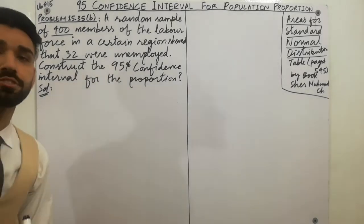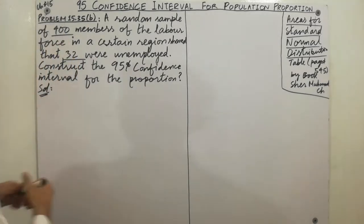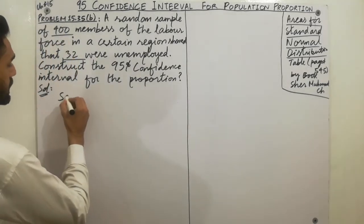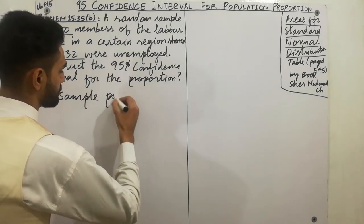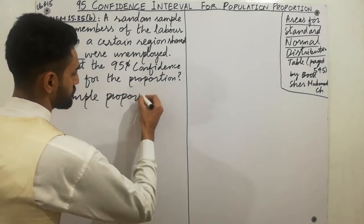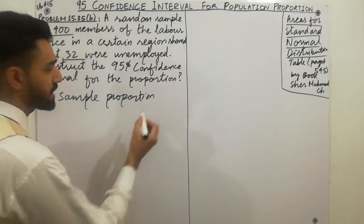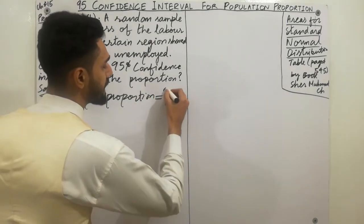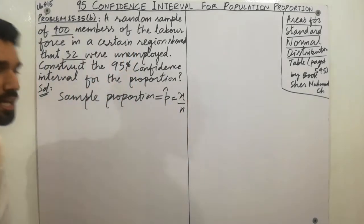First of all, I am telling you the difference between sample proportion and population proportion. Sample proportion, which is simply denoted by small p hat, is equal to - always remember - small x over small n.